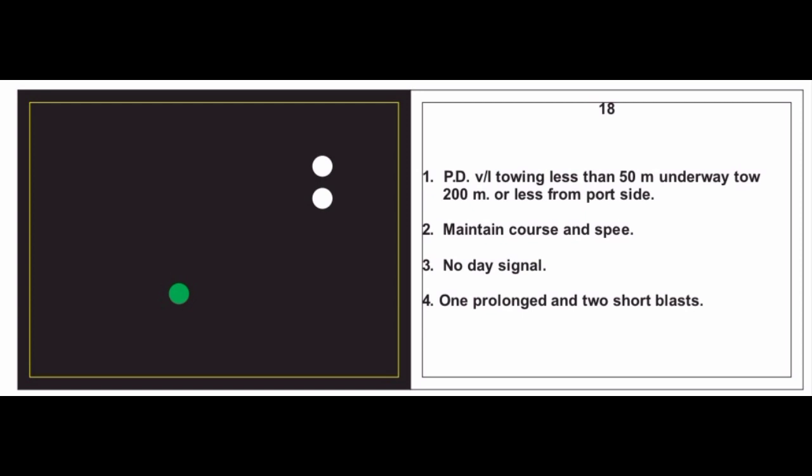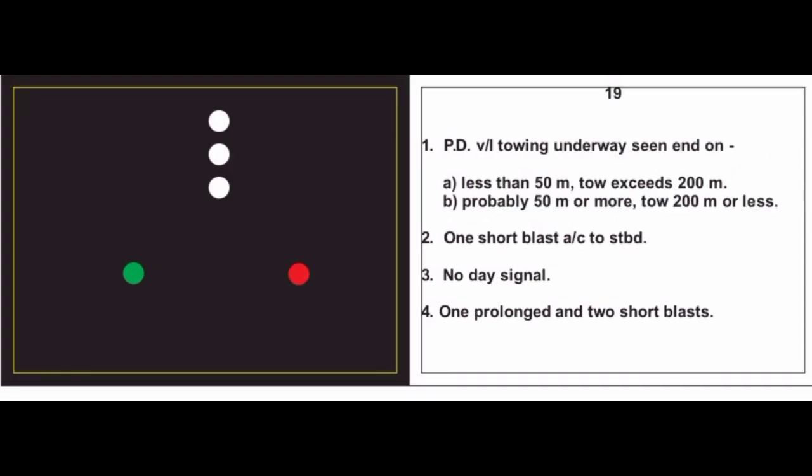Card 19: A power driven vessel towing, underway, seen end-on. Two conditions: less than 50 meters with tow exceeding 200 meters, or probably 50 meters or more with tow 200 meters or less. For both conditions: give one short blast, alter course to starboard. No day signal. Sound signal: one prolonged blast and two short blasts.